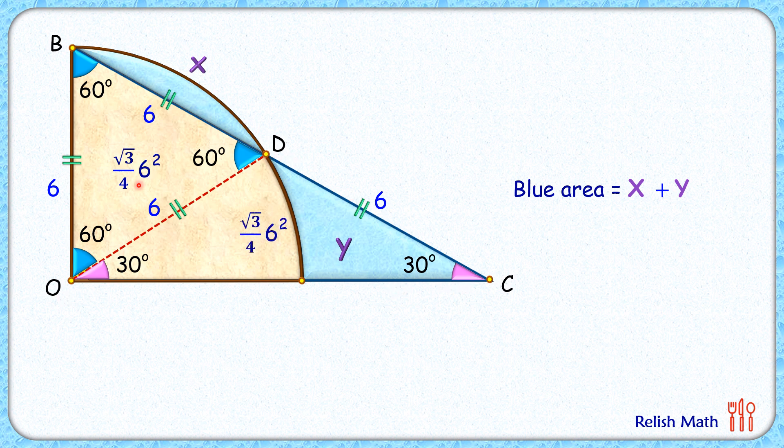Now, if we check the area of region X, that is the area of this sector minus the area of equilateral triangle BOD. The area of a sector is (θ/360) × πr². Theta is 60 degrees, so in this case, the area of the sector will be (π/6) × 6². And the area of this equilateral triangle we have already calculated: (√3/4) × 6².